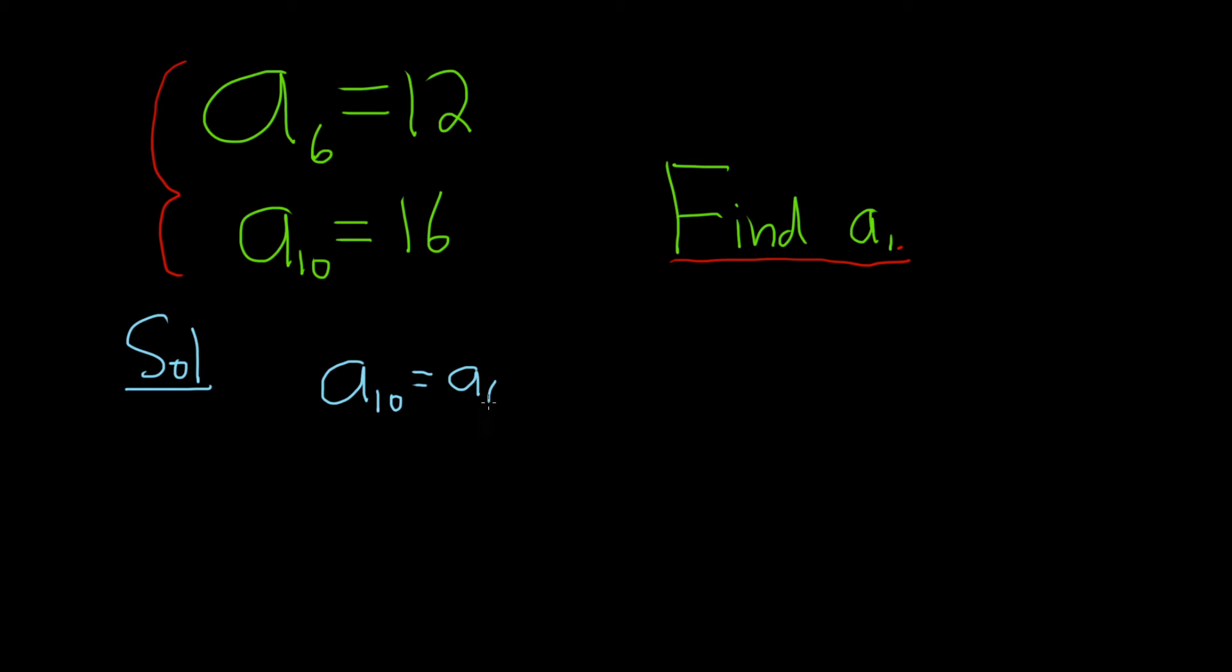If we're at the sixth term and we're trying to get to the tenth term, we have to add d four times, so plus four times d. And so this is a key equation because this will allow us to solve for d.